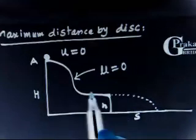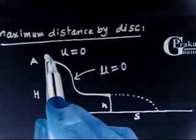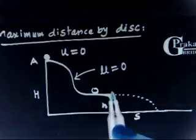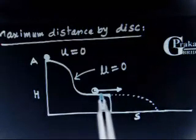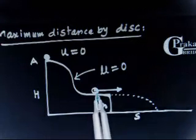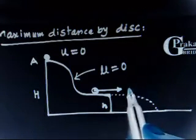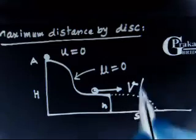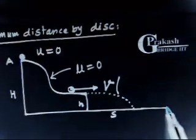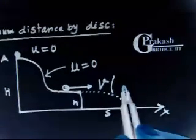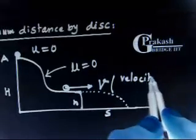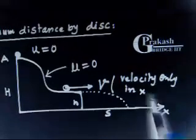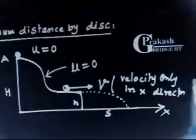When this disk is rolling over this smooth horizontal surface, it will have only one component of velocity in the horizontal direction, because this is a horizontal surface — it can only move in this direction, it cannot move in the vertical direction. Let us call this velocity V, only in the x-direction.